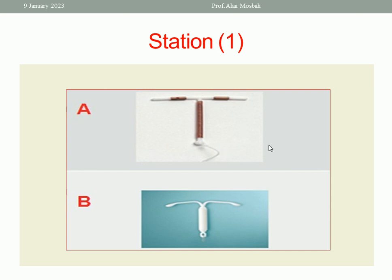Tasks related to the insertion: patient lies in lithotomy position. Separate the labia with the left hand, while with the right hand insert the vaginal speculum edgewise until half of the blade, then rotate 90 degrees and complete the insertion. Then open the blade — you will see the portion of the cervix. Lock the screw. Before inserting the speculum, you should do an abdominal examination and pelvic examination by manual examination to exclude any mass, tenderness, or signs of PID.